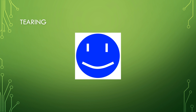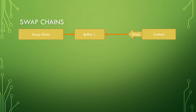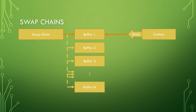To combat tearing we use swap chains. A swap chain manages one or more buffers and allows the context to draw to the screen using a specific buffer. It's not as simple as having a single buffer — it has multiple buffers and draws to a specific one called the back buffer, swapping it with the next buffer each time we want to switch views.